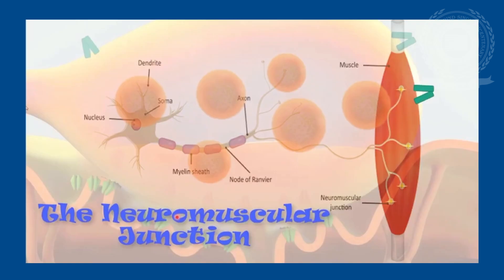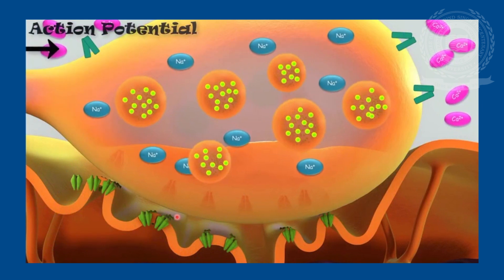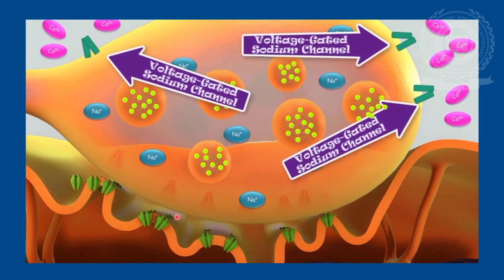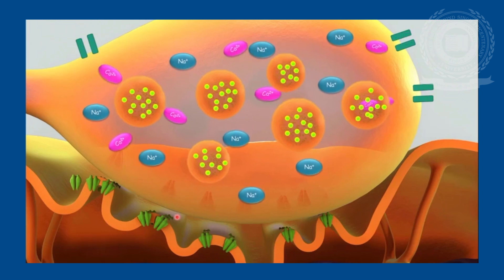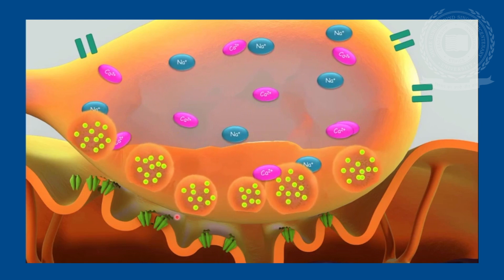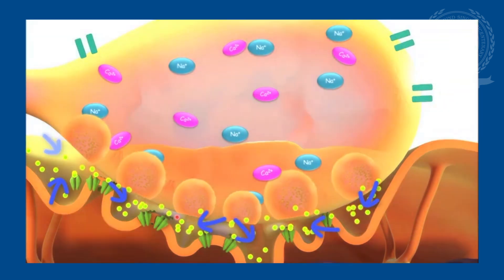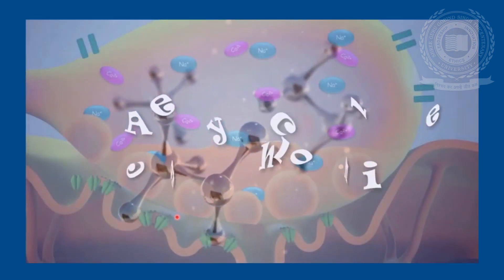Now let's study the neuromuscular junction through animation. The action potential is carried by sodium ions down the axon of the motor neuron. When sodium ions reach the axon terminal, this triggers the opening of voltage-gated calcium channels. When these channels open, calcium floods into the axonal terminal. The presence of calcium triggers the release of the synaptic vesicle from its docking site, and the synaptic vesicle fuses with the pre-synaptic membrane, releasing the neurotransmitter acetylcholine.